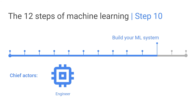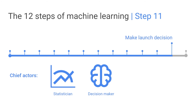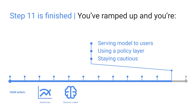Step 10 is productionizing a machine learning system. That step is finished when you have your production-ready system with automated retraining and safety nets. Now you make your launch decision in step 11. Once step 11 is finished, you've ramped up and launched it — you're serving your model to users, using a policy layer, and staying cautious.